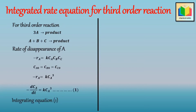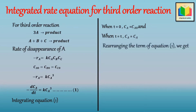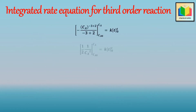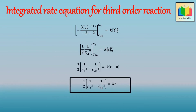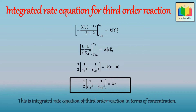Now let's integrate equation one within the limits: when t = 0, CA = CA0, and when t = t, CA = CA. Rearranging for integration gives: −dCA / CA³ = k dt. After integration and applying the limits, rearranging the terms gives: (1/2) · (1/CA² − 1/CA0²) = kt. This is the integrated rate equation for third order reaction in terms of concentration.